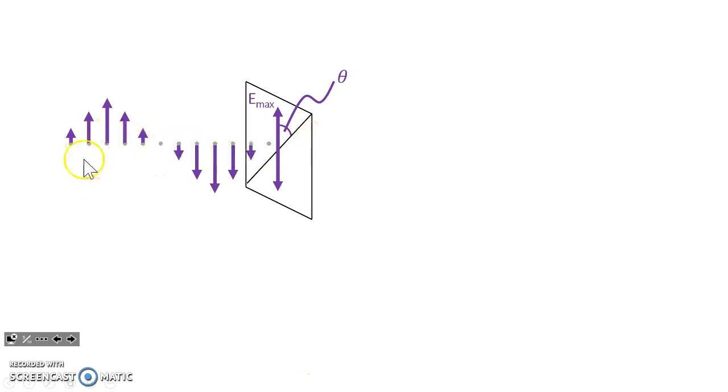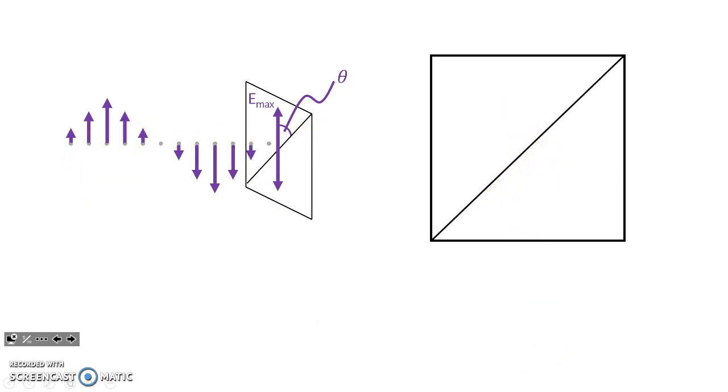If we view this from head on, then we have the amplitude shown here. Remember that this tells us what light gets through. It's an axis. So any oscillations that are parallel to the axis will pass through the filter.